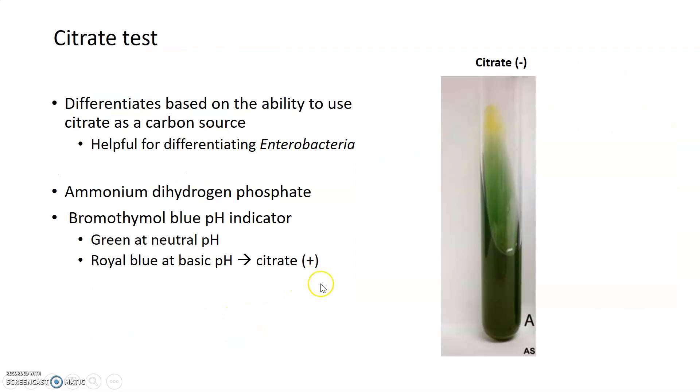The next test that we're going to talk about is the citrate test. It differentiates based on the ability of an organism to use citrate as a source of carbon for energy. Citrate tests are really helpful for differentiating between different types of enterobacteria. The Simmons citrate agar slant that you can see here is normally green in color. It contains an ammonium compound called ammonium dihydrogen phosphate, as well as bromothymol blue pH indicator, which is what gives it that green color at a neutral pH.